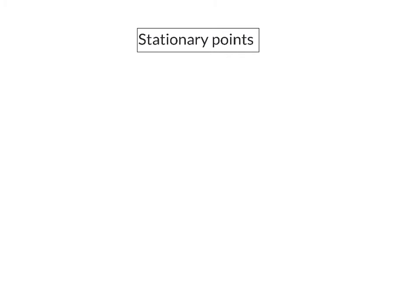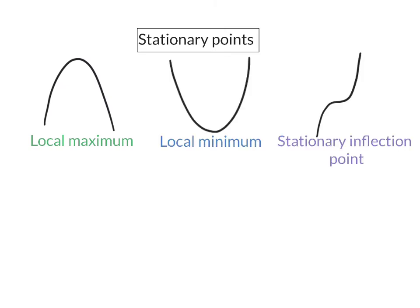The second derivative also helps us get more information on the stationary points of a graph. There are three different types of stationary points: a local maximum point, a local minimum point, and a stationary inflection point. A local maximum point will always be in the part of the graph that is concave down, and therefore its second derivative will always be smaller than zero. A local minimum point will always be in the part of the graph that is concave up, and therefore its second derivative will always be bigger than zero.